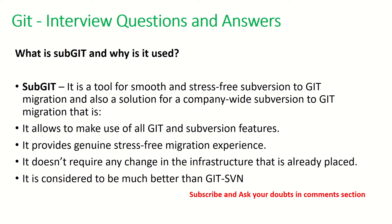What is sub-git and why is it used? Sub-git is a tool for smooth and stress-free Subversion to Git migration, and also a company-wide solution. Basically, it is a tool used when you have existing code in Subversion and want to move it to Git — sub-git will help you do that.